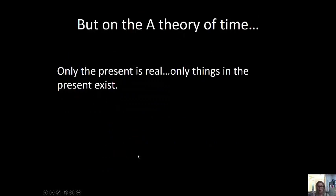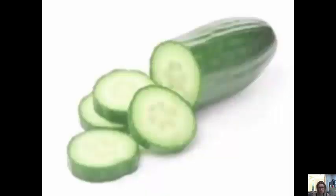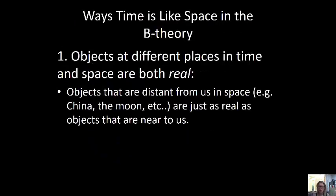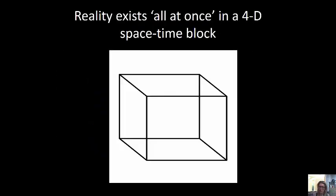On the A-theory of time, only the present is real. Only things in the present exist. We said that. Oh, and I've got a cucumber. That's for next lecture. So that's the difference between the A and B theory. That is Ted Sider's solution to this problem of time flowing.